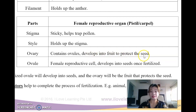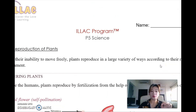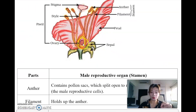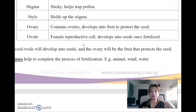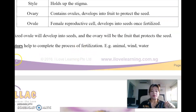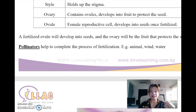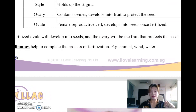The ovule develops into fruit to protect the seed. The female reproductive cell is called the ovule and develops into seeds once fertilized. Therefore, if there is only one ovule, it will develop into one seed. If there are many ovules, the fruit will have many seeds. A papaya will have many ovules; a mango will have only one ovule. A fertilized ovule develops into seeds, and the ovary will become the fruit that contains the seed.